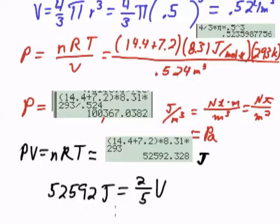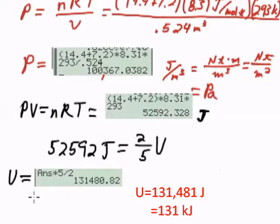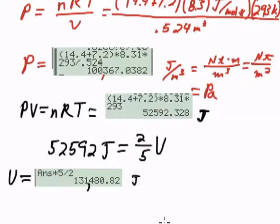For now, let's just go ahead and finish this problem. And then I'll try to describe the issue that I'm just discussing. Which amounts to nothing more than multiplying by 5 halves. To get that the internal energy is 131,480 joules.